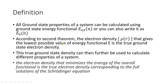According to the 2nd theorem, the electron density that gives the lowest possible value of the energy functional is the true ground state electron density. So what we are doing here is finding the electron density — the value of the electron density — that gives the lowest value of this energy functional.